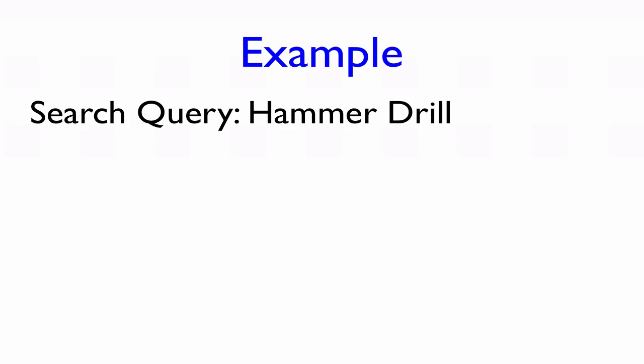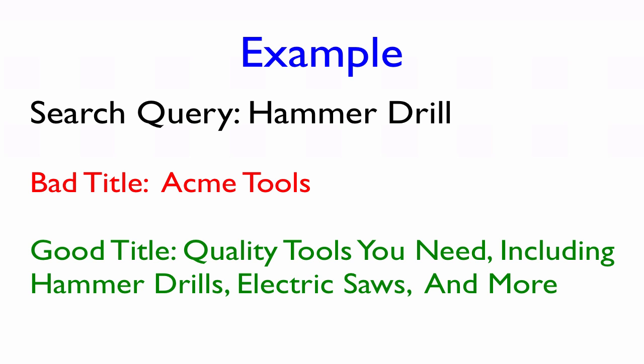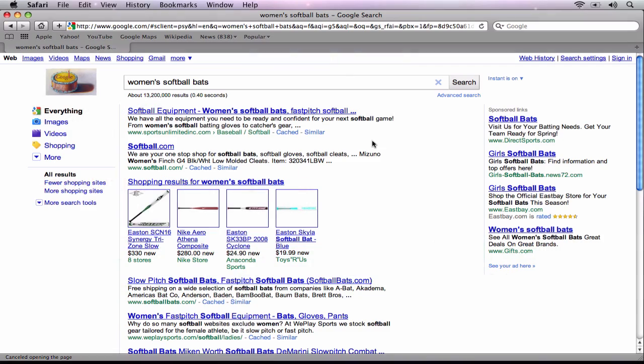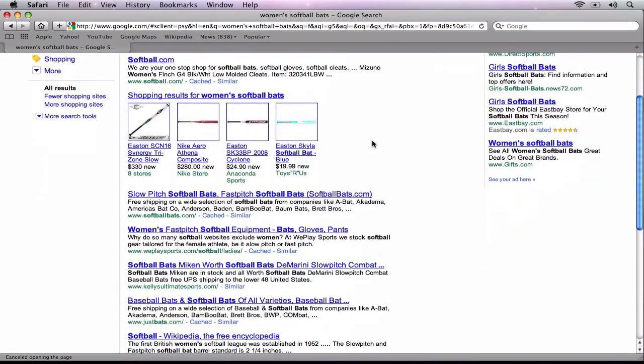For example, if someone is searching for a hammer drill and your title tag says ACME tools, many people will not click on your site. Instead, your title tag could read something such as quality tools you need including hammer drills, electric saws, and more. In addition, if your page description does not give the user enough information about what your page is about, the user may simply keep looking down the list.